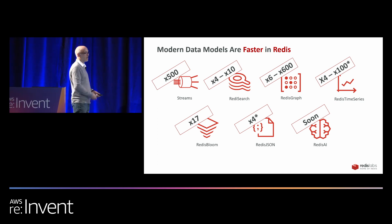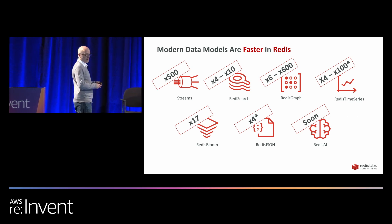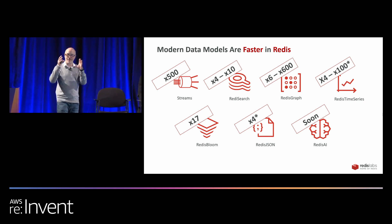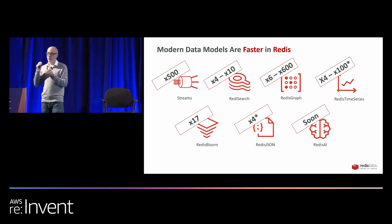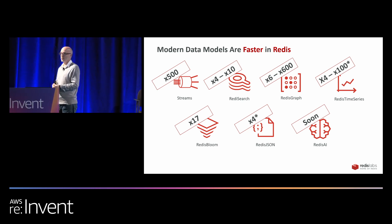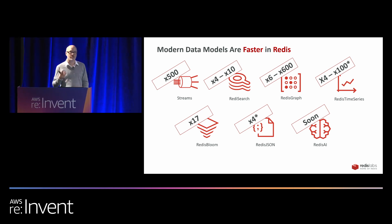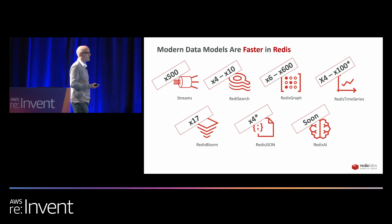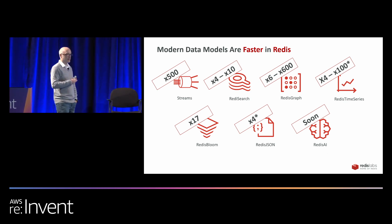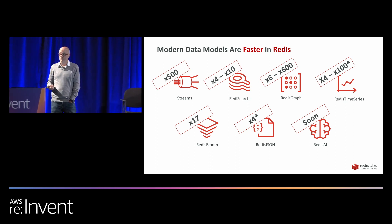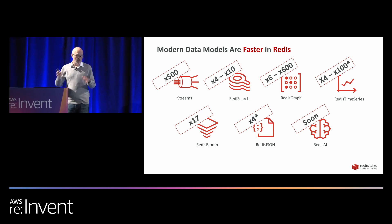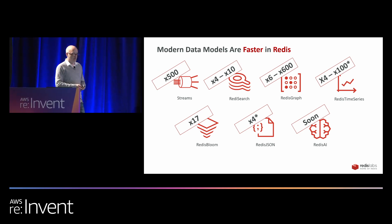When we look at graph, when we look at JSON, we always look with this lens of how fast we can serve the data — what is the average latency, how many operations per second. When you're using Redis for these particular use cases, you're going to be guaranteed to get a very fast and very optimal solution. This is part of a bigger transition that's happening in Redis.